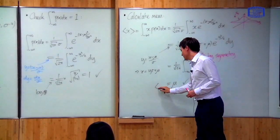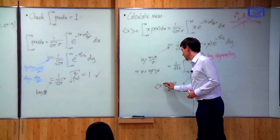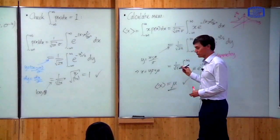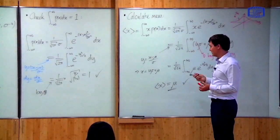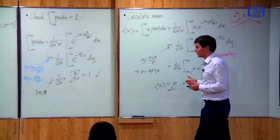That integral is exactly the same as the normalization integral multiplied by μ, which is a constant. Since the normalization integral gives 1, this integral gives μ. So the result is that the mean equals μ, as expected.